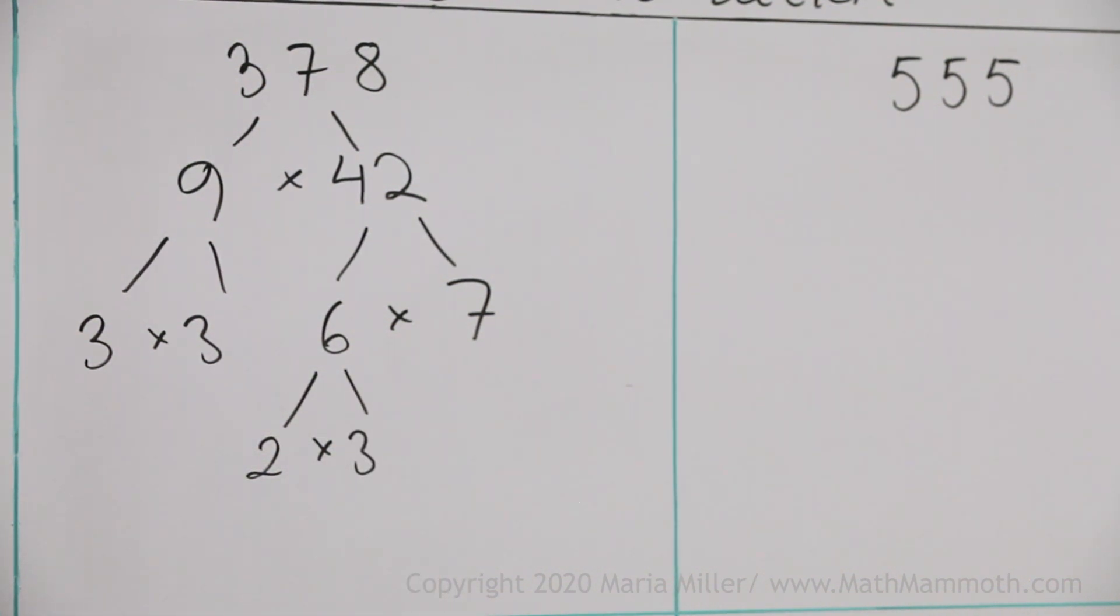Now I have all my leaves. Everything is prime: 3, 3, 2, 3, and 7.